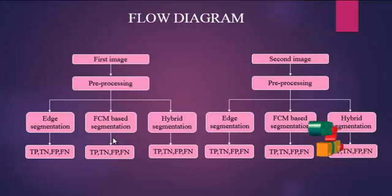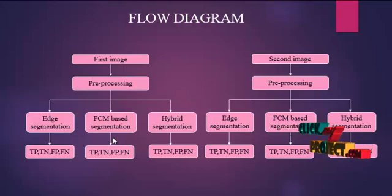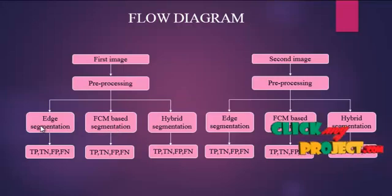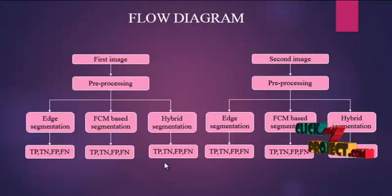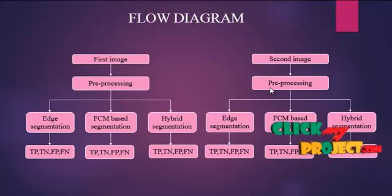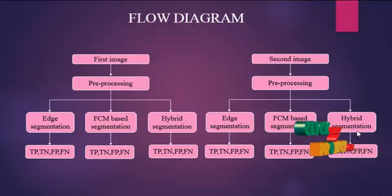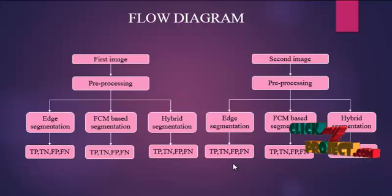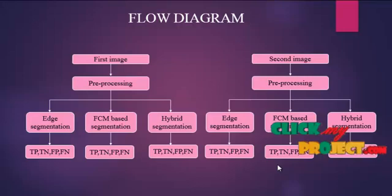For FCM-based segmentation, that is the fuzzy c-means clustering process, and then hybrid segmentation — the hybrid segmentation is the combination of both edge-based segmentation and FCM-based segmentation. It calculates TP, TN, FP, and FN. Similarly, the same process applies for the second image: we take the second MRI image, apply pre-processing to remove noise, then apply FCM-based segmentation and hybrid segmentation. The performance analysis — true-positive, true-negative, false-positive, and false-negative — is computed. Finally, the first and second images are merged to determine whether the brain tumor is detected or not.